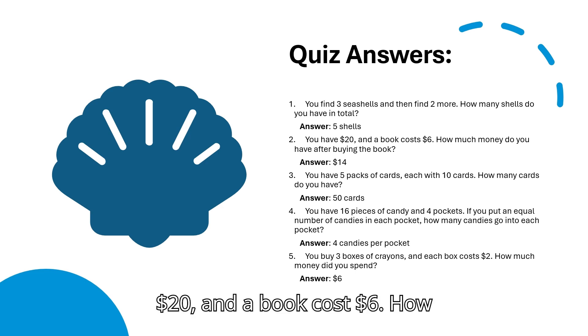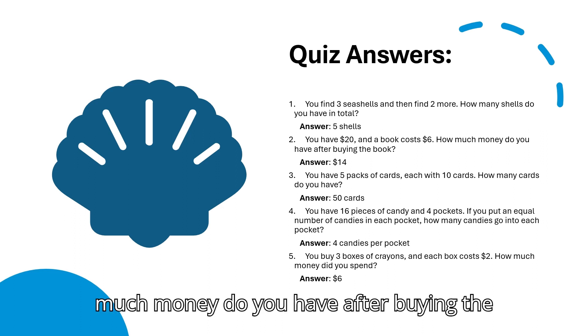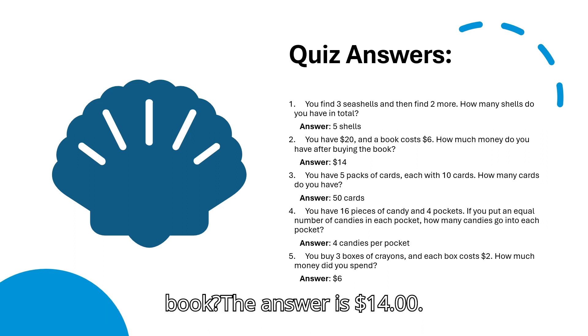Question 2: You have 20 dollars, and a book costs 6 dollars. How much money do you have after buying the book? The answer is 14 dollars. To explain, you began with 20 dollars, and after purchasing the book for 6 dollars, you subtract 6 from 20, leaving you with 14 dollars.